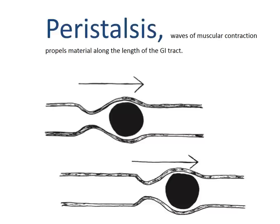Peristalsis is the term used to describe the coordinated waves of muscular contraction that occur in the wall of the gastrointestinal tract — and it can also occur in other places, such as the ureters conducting urine from the kidney to the urinary bladder. Muscles in a short length of the gastrointestinal tract contract while those immediately in front relax, allowing content to be squeezed along the length of the lumen. The area of muscle that was relaxed then contracts while the length in front relaxes, propelling material further forward.